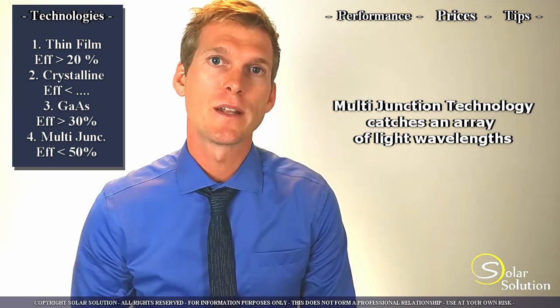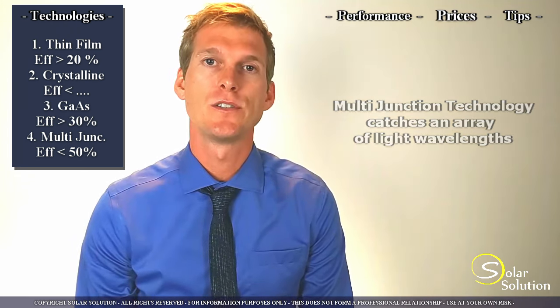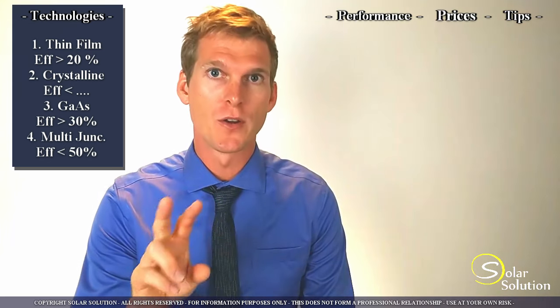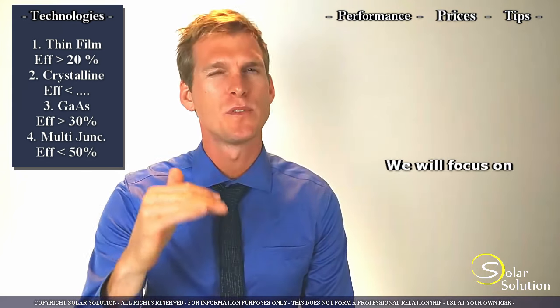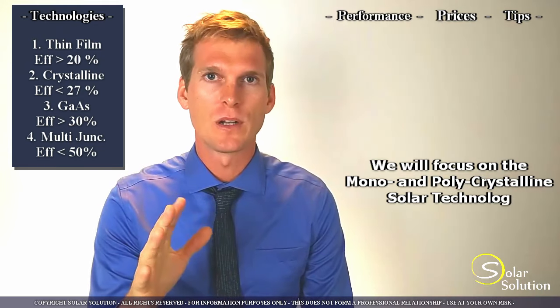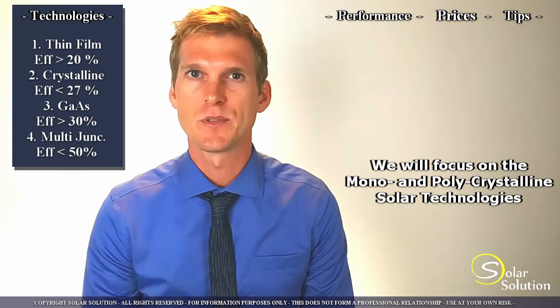This video will only look at the crystalline solar cell technologies which includes both the mono and poly. Mono goes up to 27 percent efficiency and polycrystalline up to 22 to 23 percent.